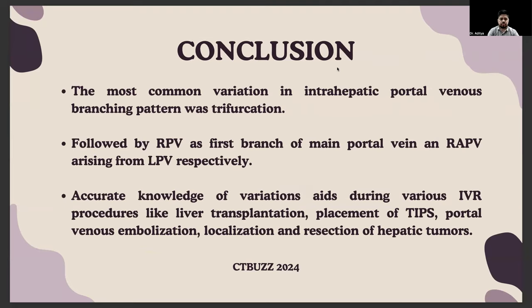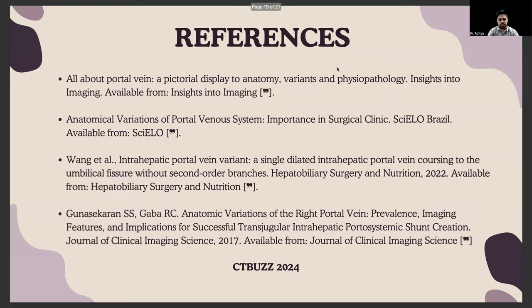In conclusion, the most common variation in the intrahepatic portal vein branching pattern was trifurcation, followed by RPV as the first branch of the main portal vein, and RAPV arising from the left portal vein, respectively. Accurate knowledge of these variations aids during various IVR procedures such as liver transplantation, placement of TIPS, portal vein embolization, localization, and resection of hepatic tumors.